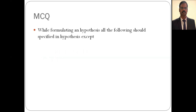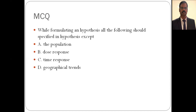An MCQ: 'While formulating a hypothesis, all of the following should be specified except?' — the options include population, dose response, time response, and geographical trend. Geographical trend may or may not be useful, but the five essential features for hypothesis formulation are: population, exposure, outcome, dose response, and time response.